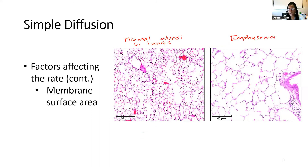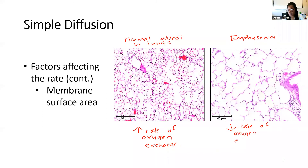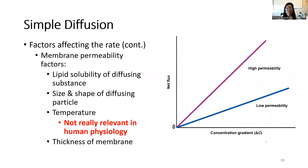In normal lungs, we have a high rate of oxygen transfer or exchange. Whereas in emphysema, because there is less surface area, there is a slower or lower rate of oxygen exchange. This is a really important and relevant clinical example that illustrates how surface area plays a role in membrane transport.